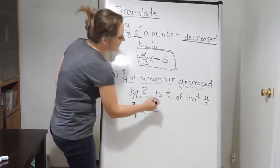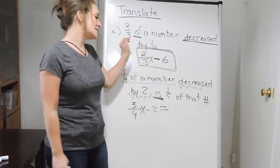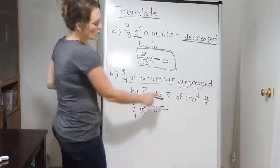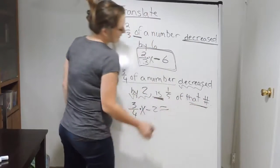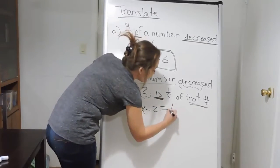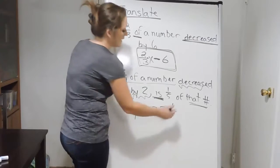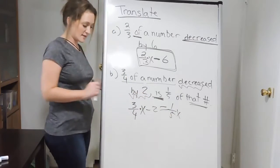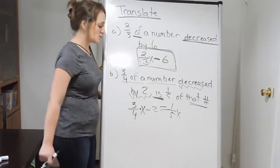Now when you see is, that typically means equals. And it says that this is one-fifth of that number. So one-fifth of that number. Now what number is it talking about? It's talking about the same number that we used over here. So this is equal to one-fifth of, again remember, of means to multiply, of that same number. The number was x. I'm going to use x over here.